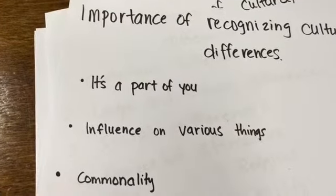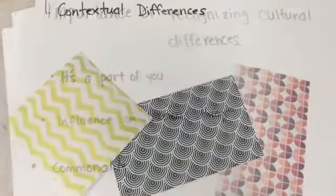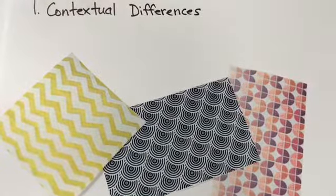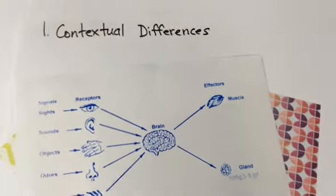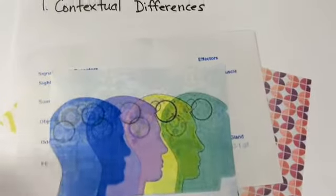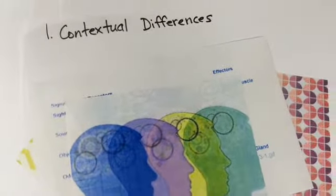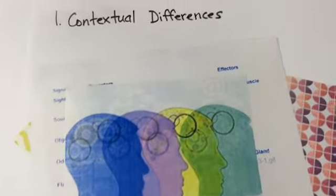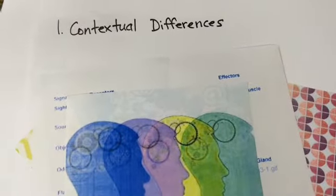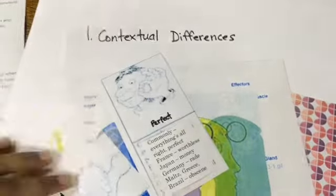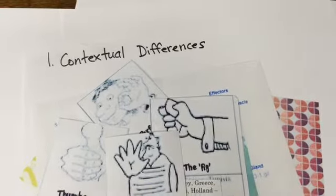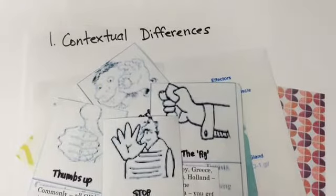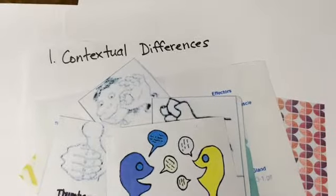Contextual differences talk about cultural context — the pattern of physical cues, environmental stimuli, and implicit understanding that convey meaning between members of the same culture. There are two types: High-context culture occurs when a person relies less on verbal communication and more on nonverbal actions and environmental setting to convey meaning. Low-context culture occurs when people rely more on verbal communication and less on nonverbal cues to convey meaning.